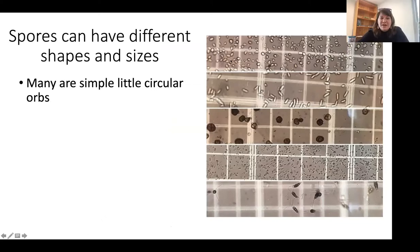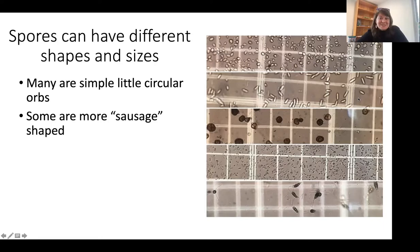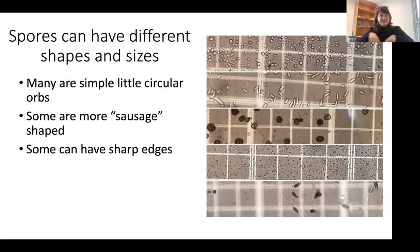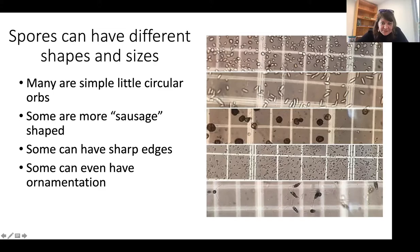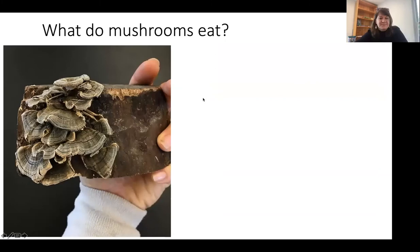A lot of spores are just circular orbs - little circly dots. Others look more like sausages, and are actually described in textbooks as sausage-shaped. Some have really sharp angular edges; one looks like a soccer ball up close, where it has kind of flat sides even though it's a circle. And then there are even ones that have little tails, with distinct sections and small tails on the end.